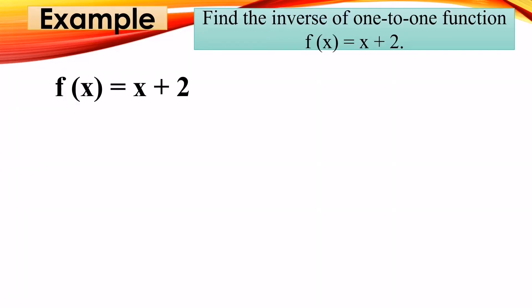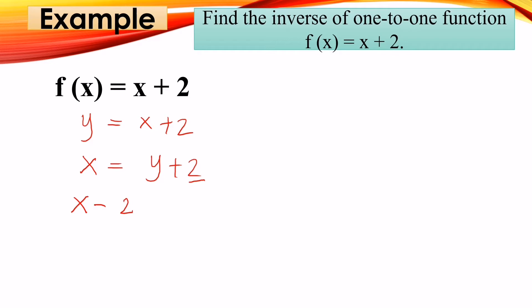Let us have an example. Find the inverse of the 1-to-1 function f(x) = x + 2. Step 1: rewrite f(x) as Y = x + 2. Step 2: interchange X and Y — Y becomes X, and X becomes Y + 2. Then solve: bring X down and positive 2 becomes negative 2, so Y = X − 2. Therefore, f⁻¹(x) = x − 2. That is the inverse of f(x) = x + 2.